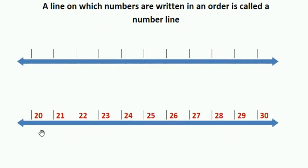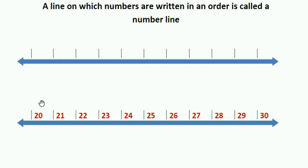Here in this number line you can see numbers starting from 20 to 30. The numbers are written in counting order from left to right. To mark a number on the number line, we start from the leftmost number and count forward. For example, to mark number 24, we start from 20 and count forward to mark 24.